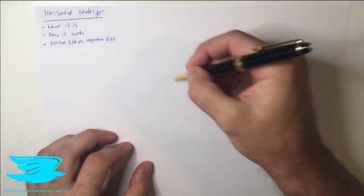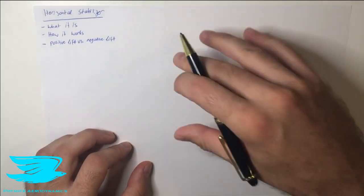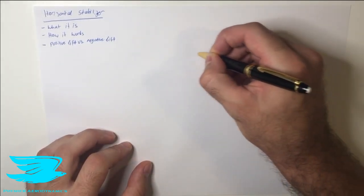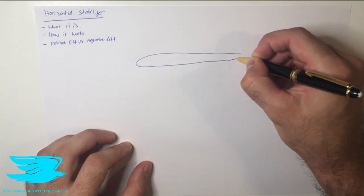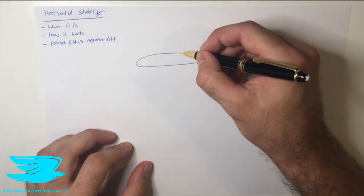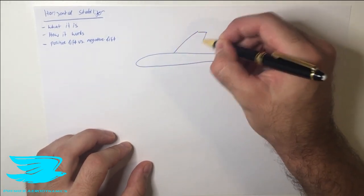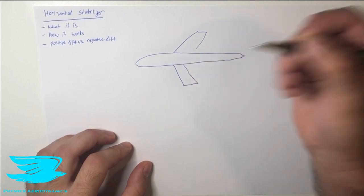So what is a horizontal stabilizer? Let's say we have a plane, so we're looking down on top of it. We have the regular fuselage like this, just idealized, and it comes out to a point here. Then we have the wings, one on each side. It's a crude drawing.